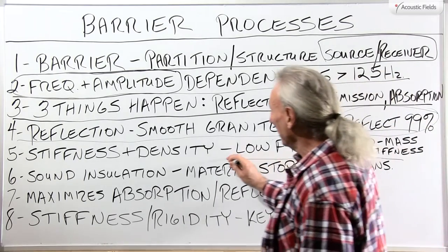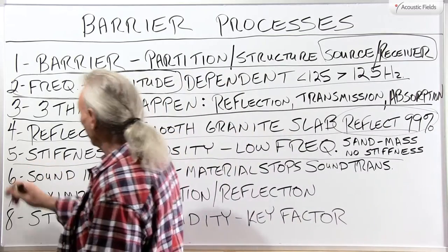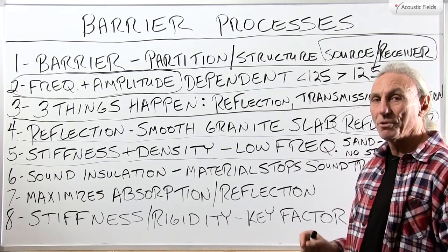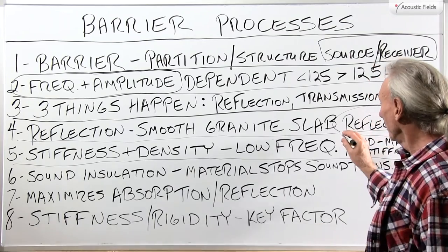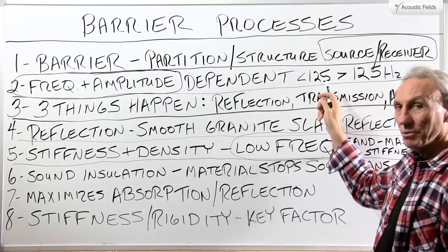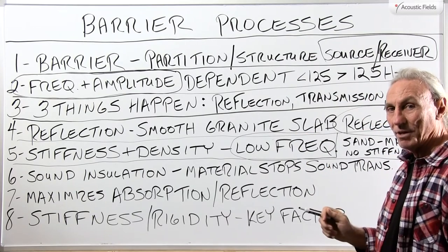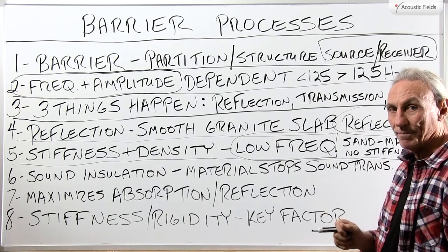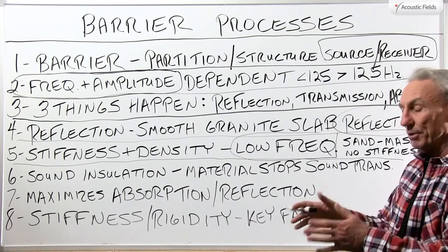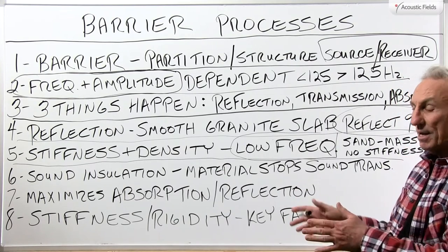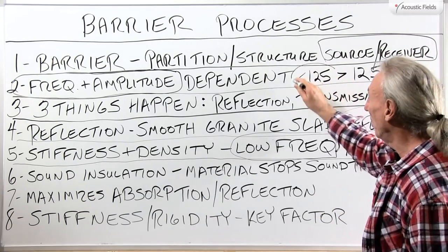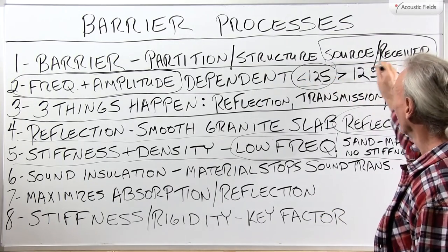What are the characteristics that we look for in our barriers? Stiffness and density — those are the two variables that we have to deal with, especially when we're dealing with low frequencies. Frequencies below 125 Hz — remember from past videos — those are the hardest. That is the thickest barrier, the most expensive barrier, multiple layers, different densities, different construction methodologies. A lot of things have to go on below 125 cycles.